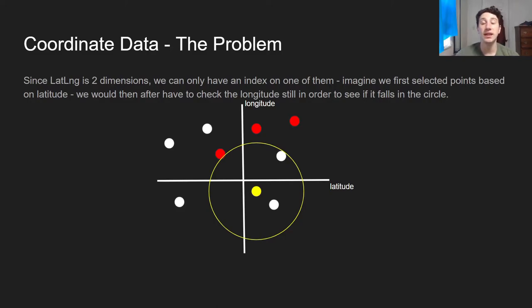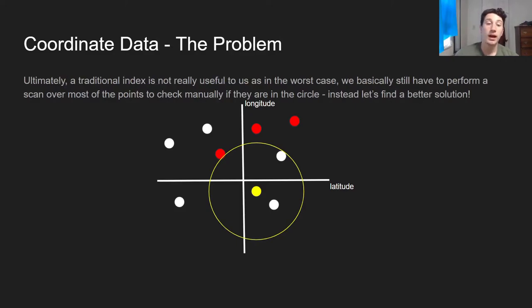It would be super inefficient. It's basically just a full table scan. So obviously, that's not going to work. What can we do that would actually take advantage of an index and allow us to quickly find all the points within a certain distance of one point?